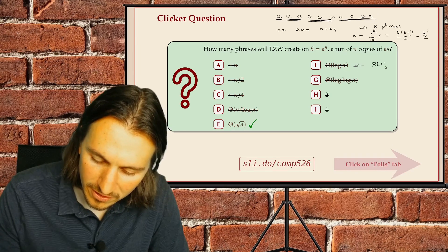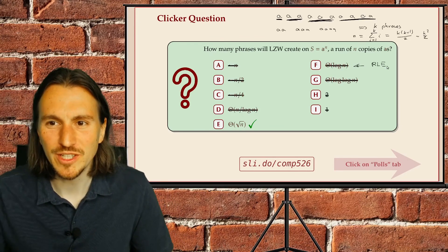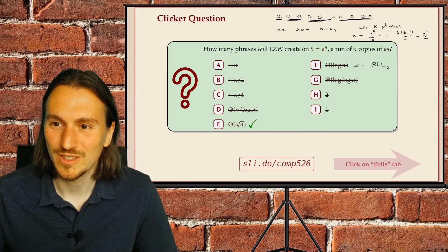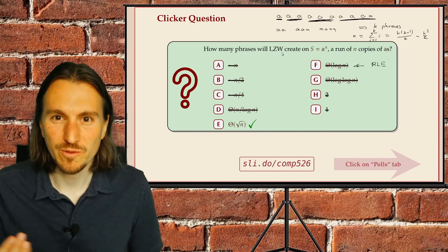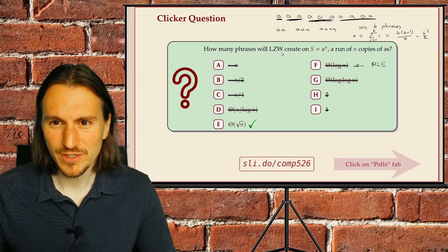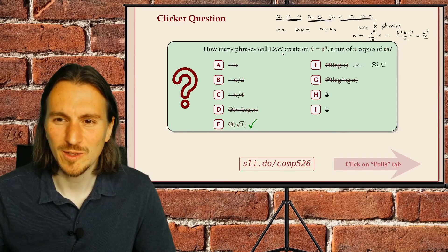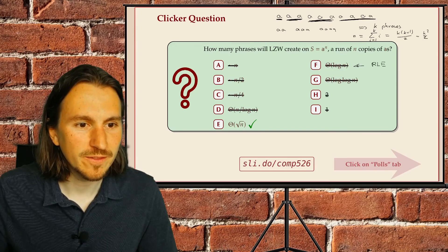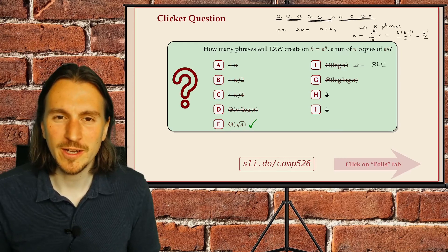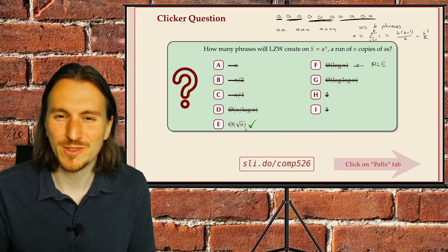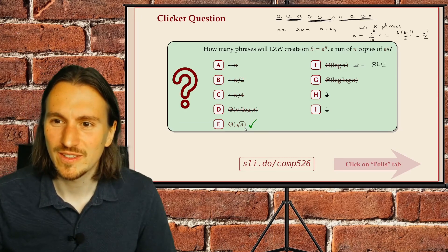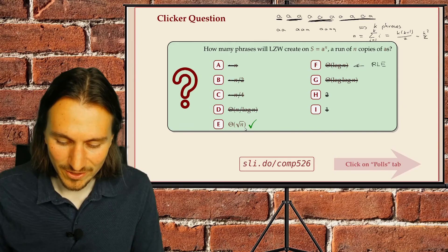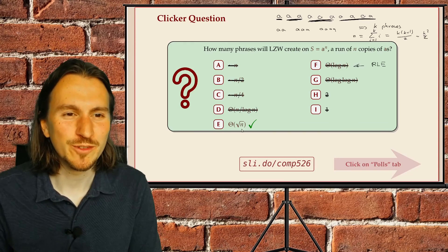Run-length encoding gets this down to log n (the number of bits needed to specify the length), which is hard to beat. But LZW achieves sqrt(n), which is way better than linear — whereas Huffman coding can't get sub-linear when used for individual symbols. Keep this in mind: sqrt(n) is essentially the best case for LZW.